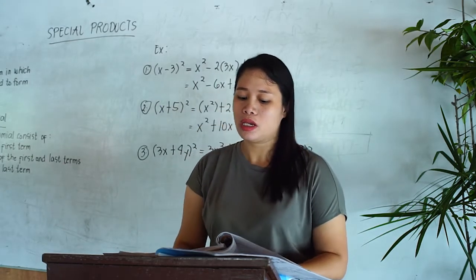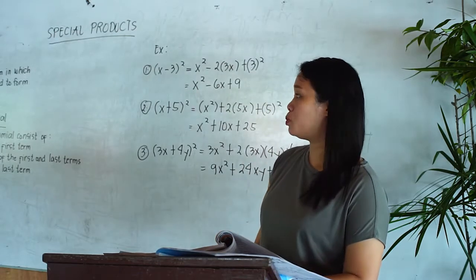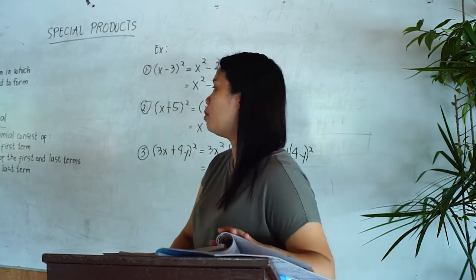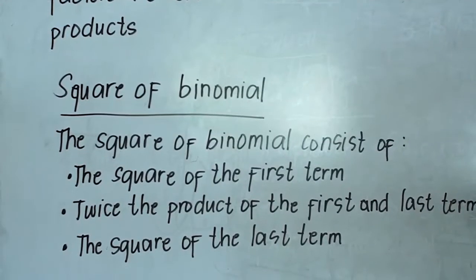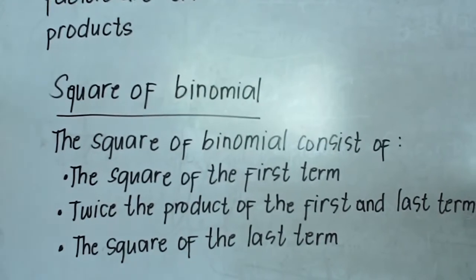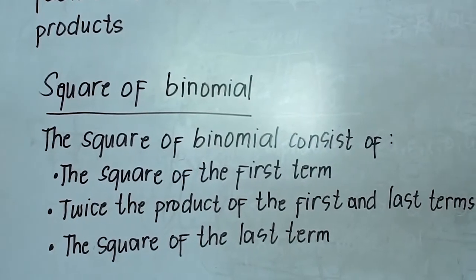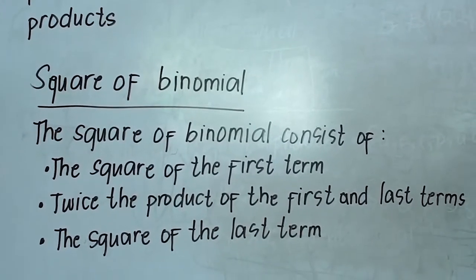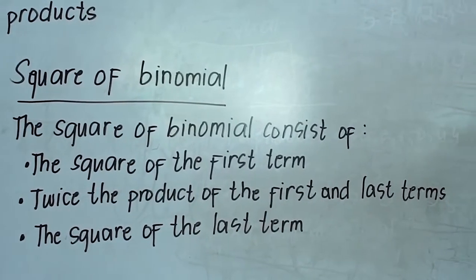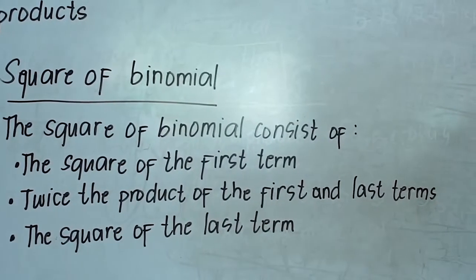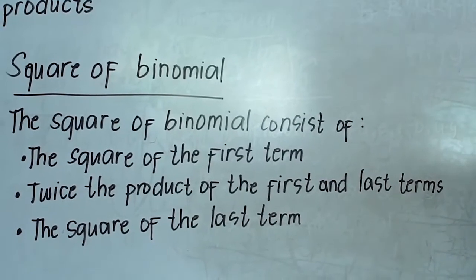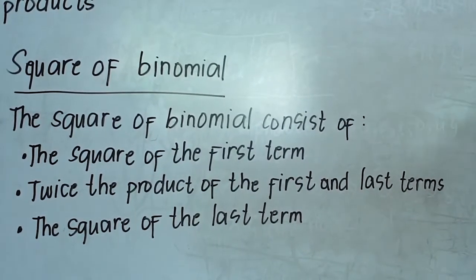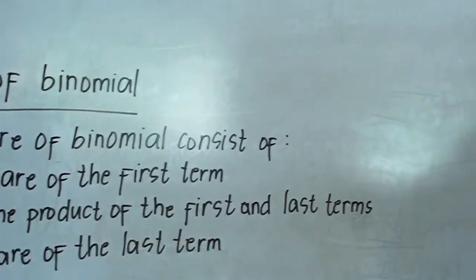We start using examples in special products in square of a binomial. In squaring a binomial, first we have to square the first term, then second, twice the product of the first and the last term, and then the third one is the square of the last term.